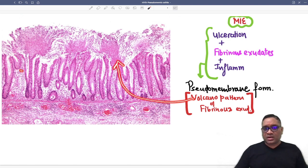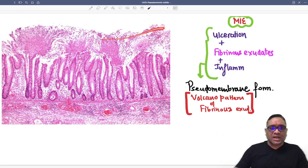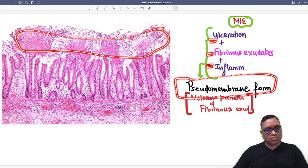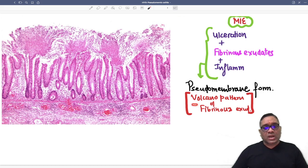So you can see this is the mucosal aspect and the epithelial cells. And you can notice this is the layer which we call as a pseudomembrane, which is consisting of ulceration, fibrinous exudate and inflammation. So all these things are forming pseudomembrane. So this is the pseudomembranous colitis, where you are going to see volcano pattern of fibrinous exudate.